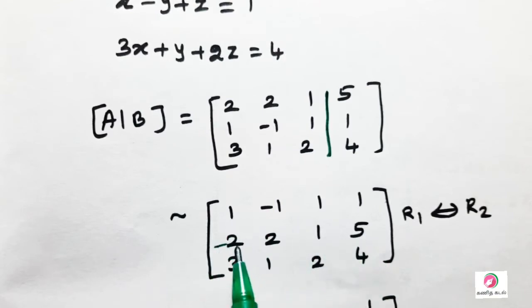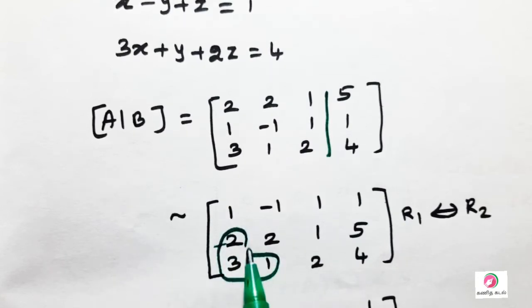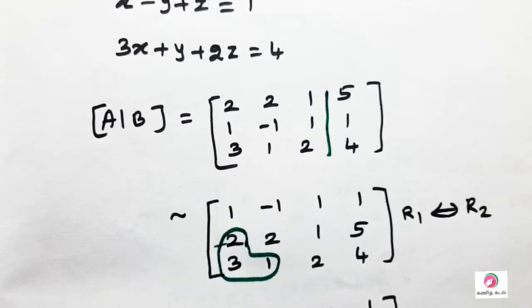Now we will change the third row. If we change the third row, we will transform it.